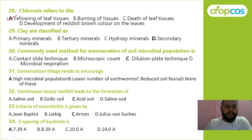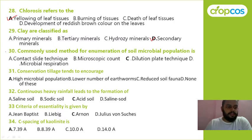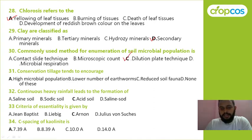Clay is classified as primary mineral, tertiary mineral, hydroxy mineral, or secondary mineral? The answer is secondary mineral. Commonly used method for enumeration of soil microbial population: contact slide technique, microscopic count, soil dilution, or microbial respiration? Correct answer is C — soil dilution. Conservation tillage tends to encourage high microbial population — correct answer is A.